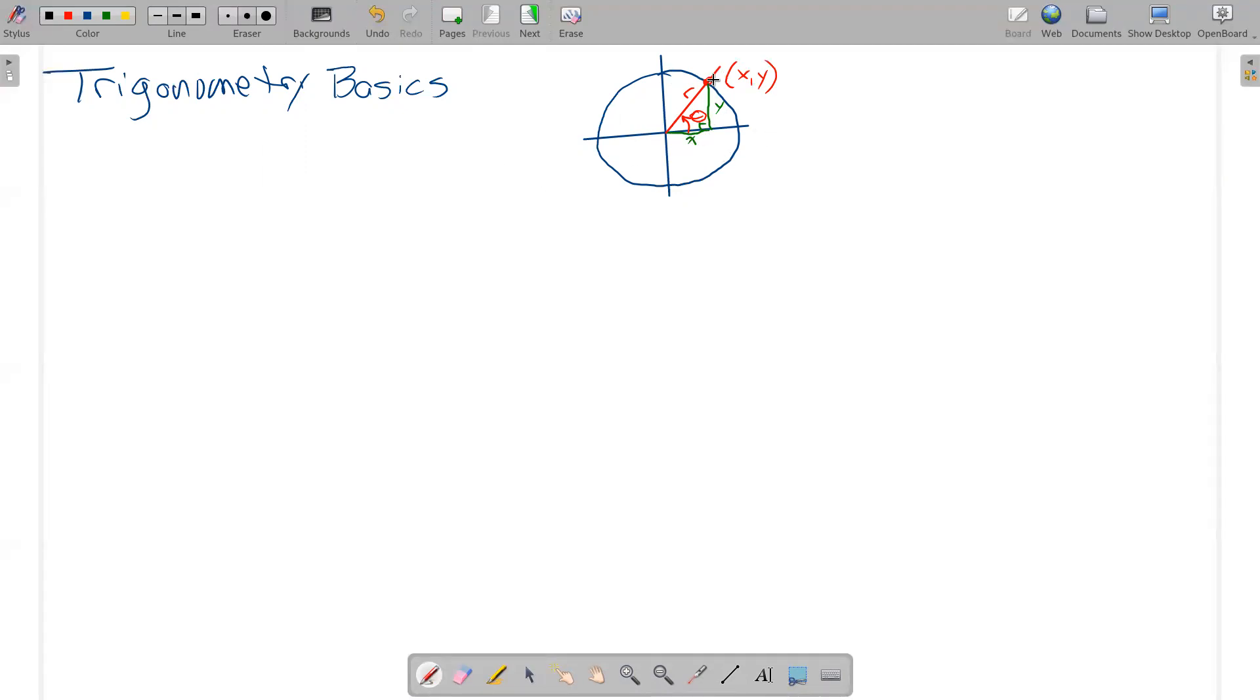Based on that, we've learned that the values of x and y vary depending on what theta is. So x is a function of theta, and y is a function of theta, and those functions have very special names.